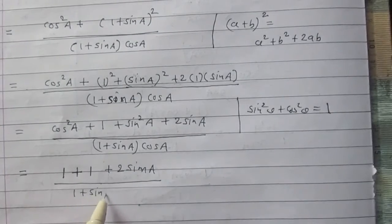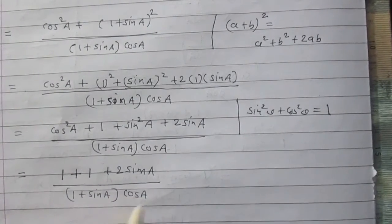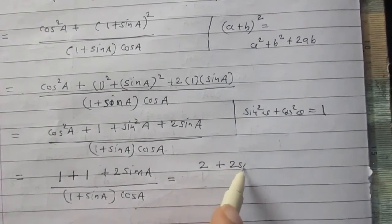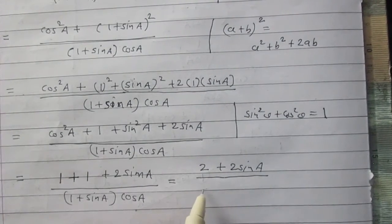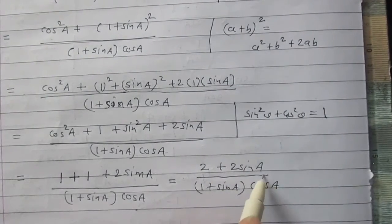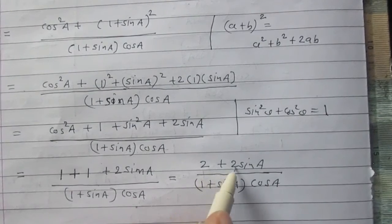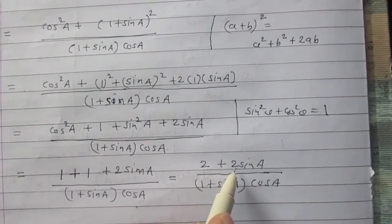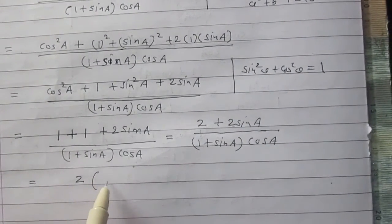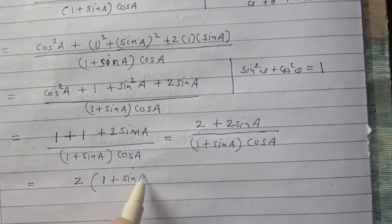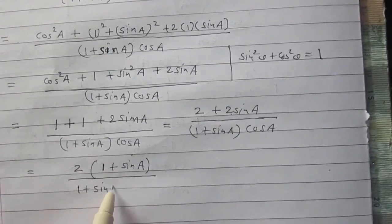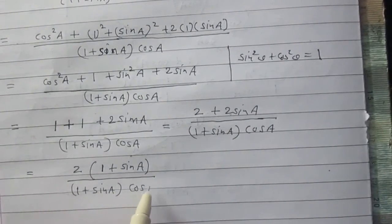The denominator is 1 plus sin A multiplied by cos A. We can simplify the numerator as 2 plus 2 sin A, divided by 1 plus sin A in multiplication with cos A. The number 2 is common in these two terms, so we can write 2 as a common factor outside the bracket, with 1 plus sin A inside. The denominator is 1 plus sin A times cos A.